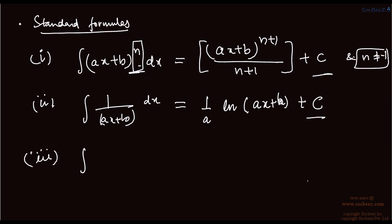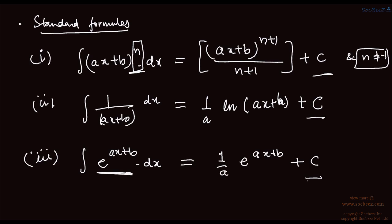The third standard formula: the integral of e to the power (ax + b) dx equals 1/a times e to the power (ax + b) plus c. The coefficient of x, which is a, comes down to the denominator.